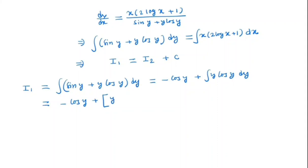We have y, integral of cos y is sin y, minus derivative of y is 1 and integral of cos y is sin y. So we have minus cos y plus y sin y and it is nothing but integral minus sin y.